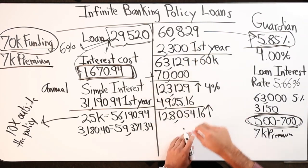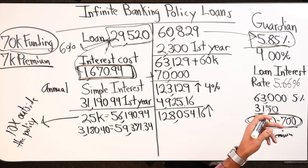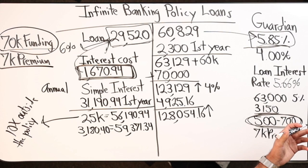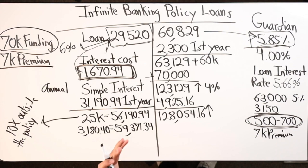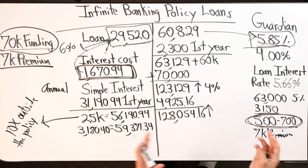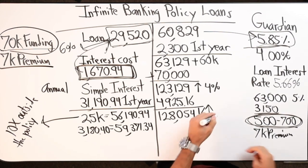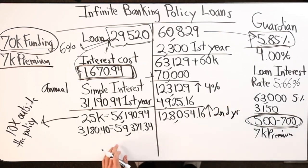So I've got $59,371.34 in outstanding policy loans, and I still have my money growing - all of it as if I never touched it. Right now on my site it says I've got $60K available cash value to use, with $30,244.97 available. I could take a max loan out right now for another $30K. So at the end of year two I've got $128,054.16 with all that outstanding.